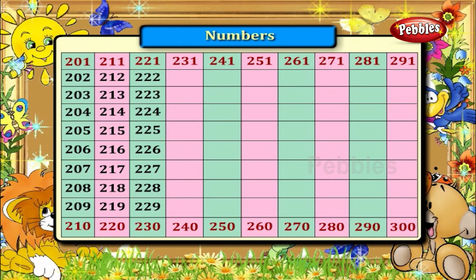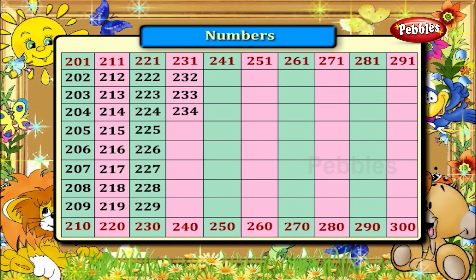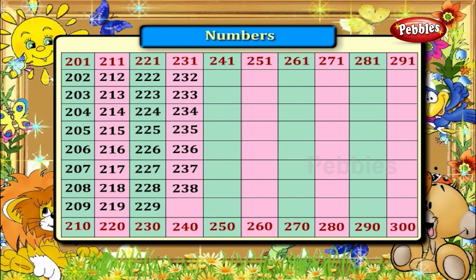Numbers between 231 and 240. They are 232, 233, 234, 235, 236, 237, 238 and 239.